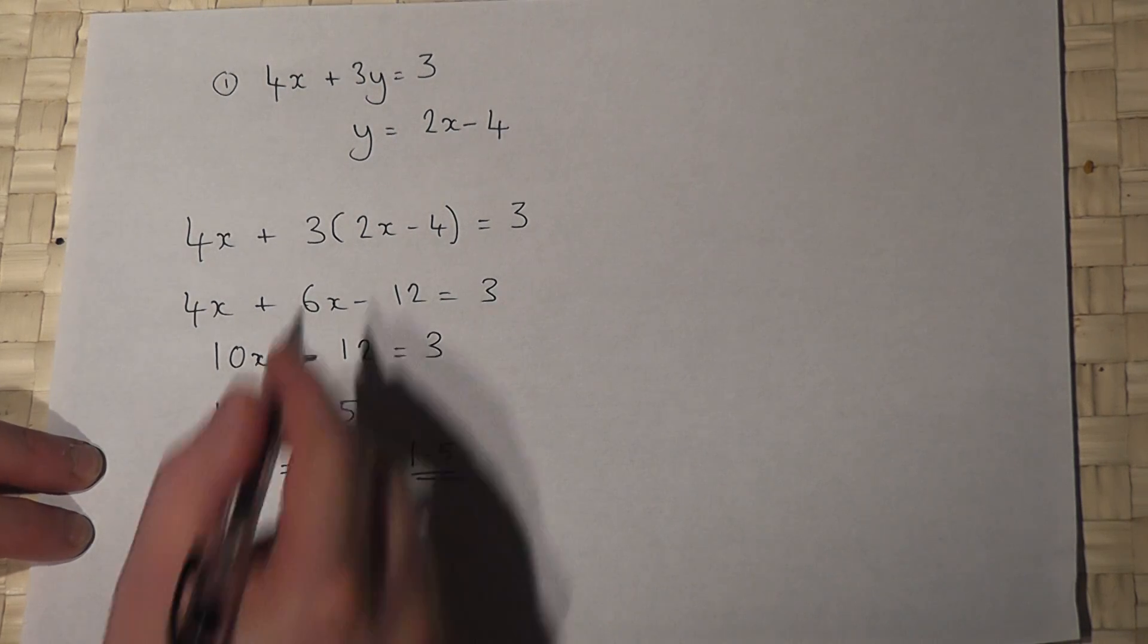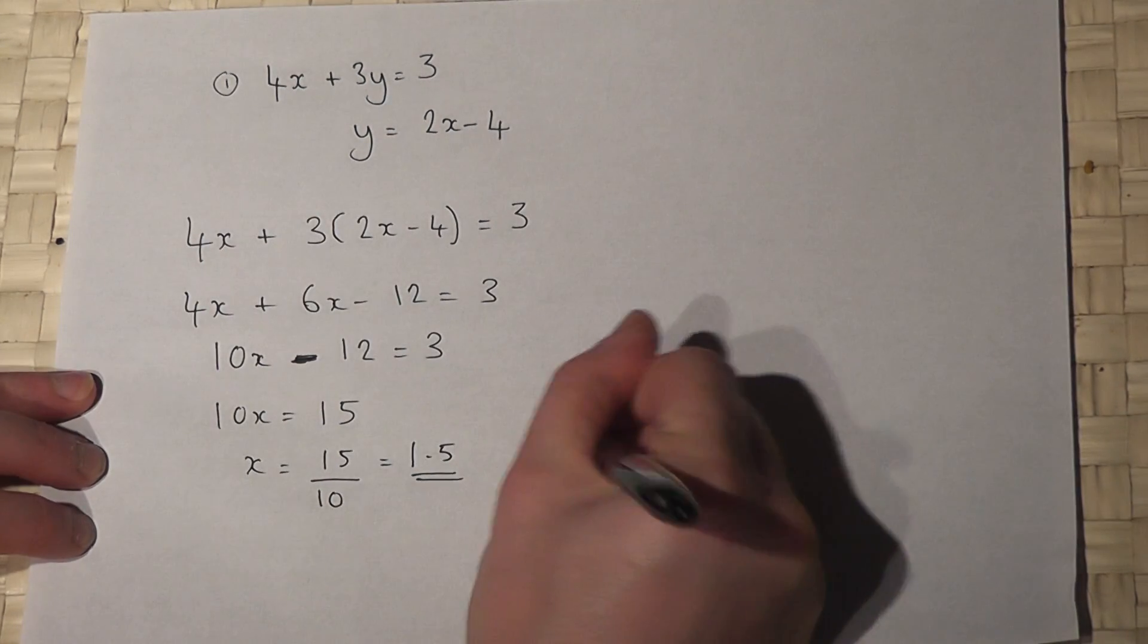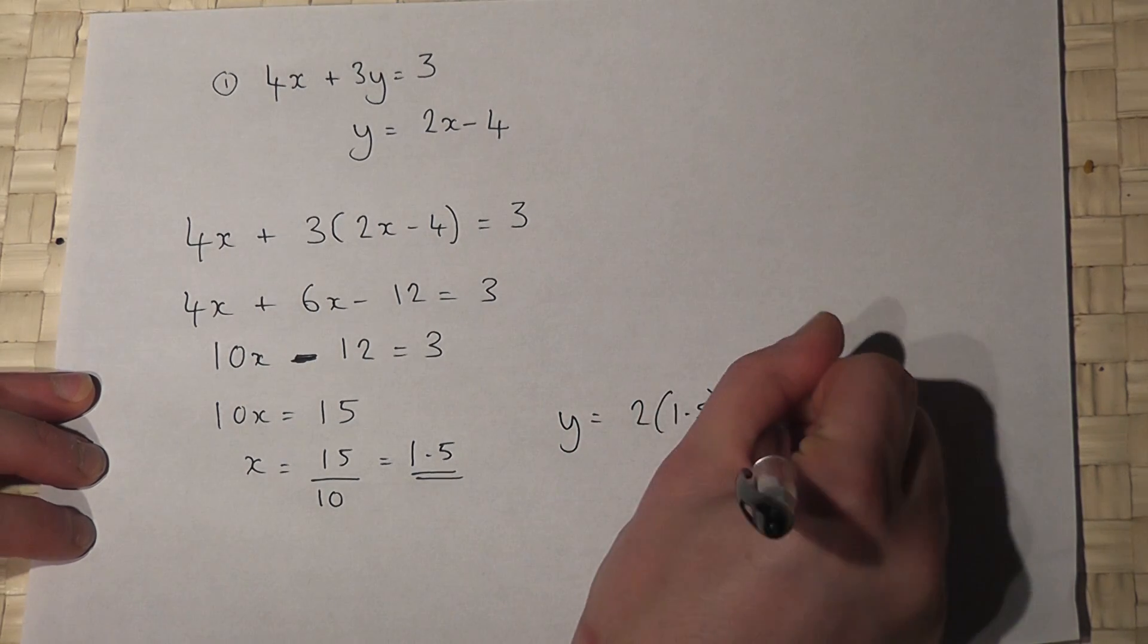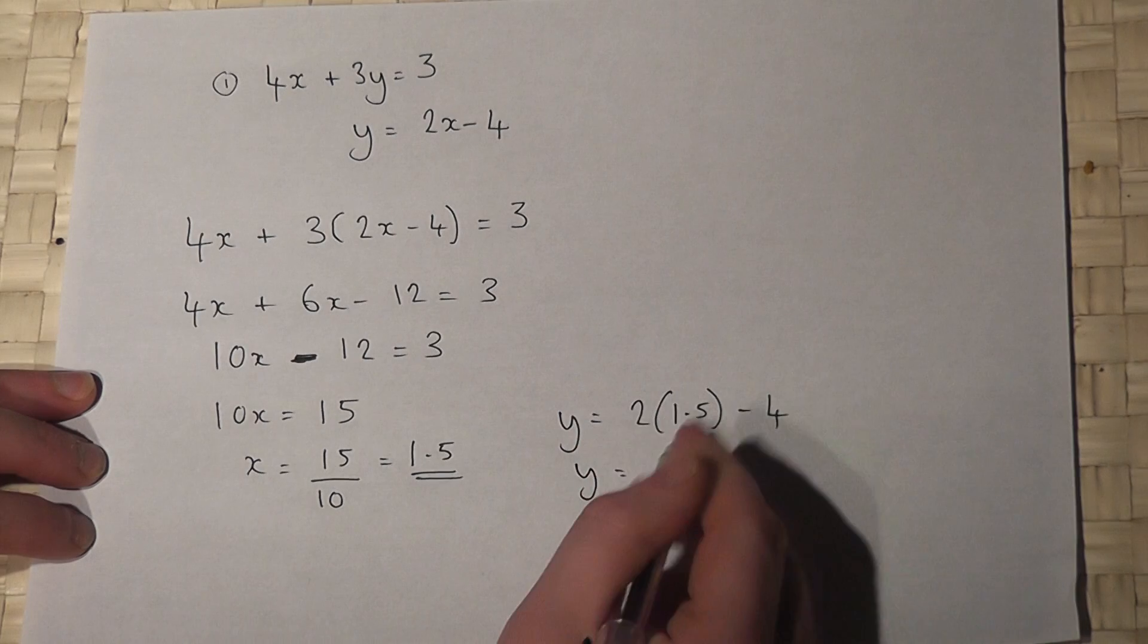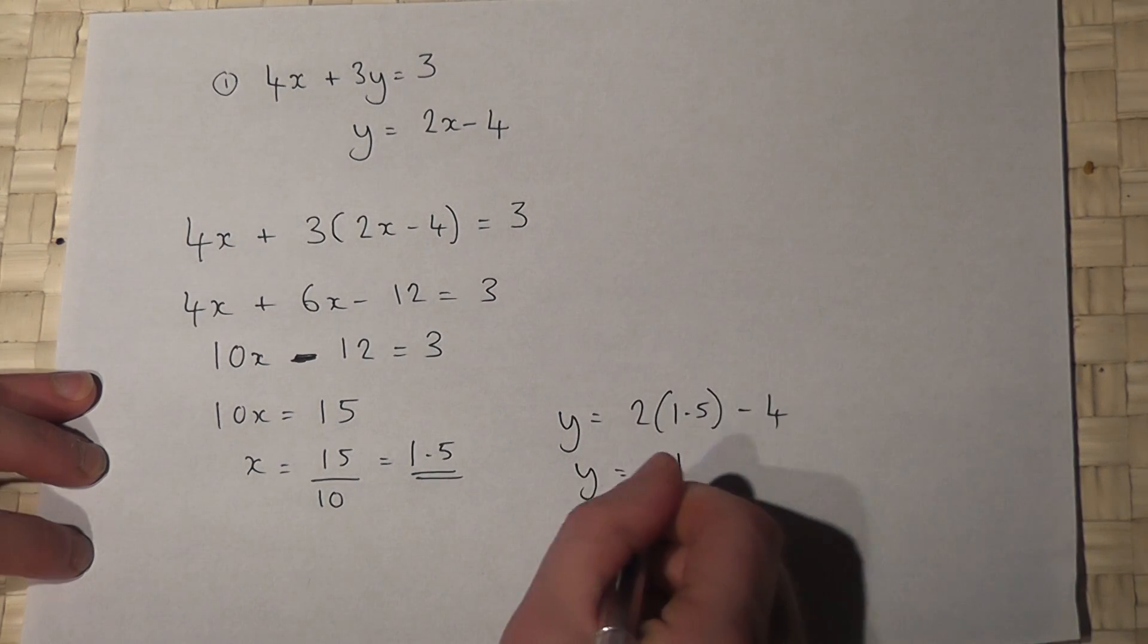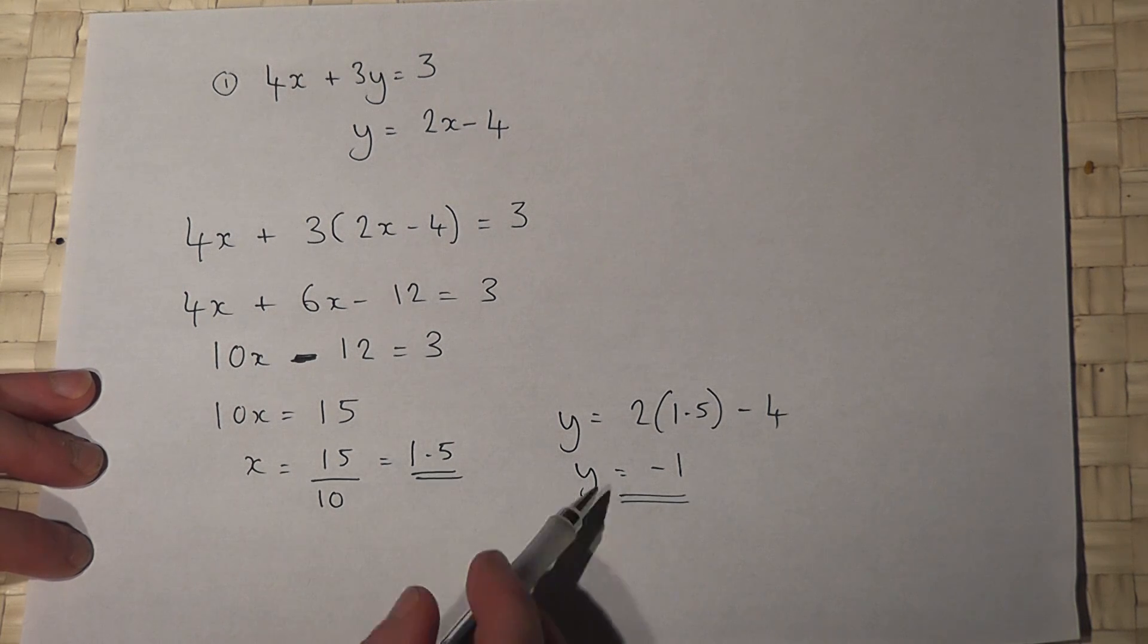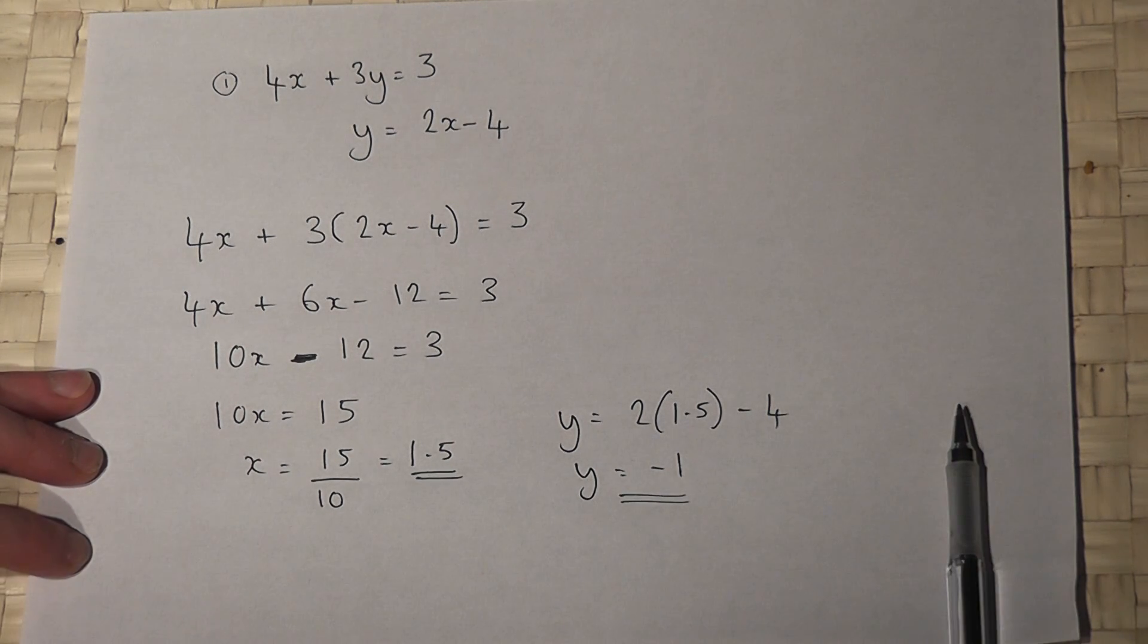Then, don't forget to find y. So y equals 2 lots of x, which is 1.5, take away 4. So y equals 3 take away 4, which is minus 1. The solution is x equals 1.5 and y equals minus 1.